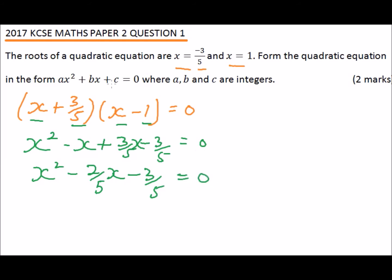Because we need to write our equation in this format, we multiply throughout by 5. We'll get 5 times x squared is 5x squared, minus 5 times 2 over 5x is 2x, and minus 3 over 5 times 5 is minus 3 equals 0.